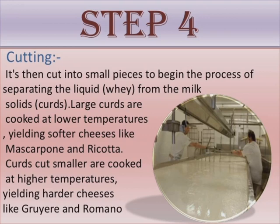The next step is cutting. The solidified milk is then cut into small pieces to begin the process of separating the liquid whey from the milk solids, that is curds. Large curds are cooked at lower temperatures, yielding soft cheeses like mascarpone and ricotta. Curds cut smaller are cooked at higher temperatures, yielding harder cheeses like Gruyère and Romano.